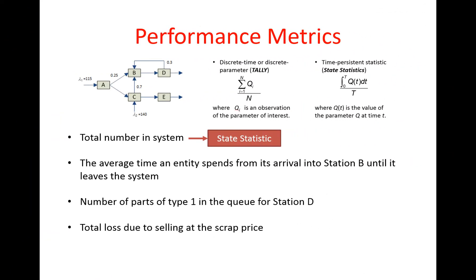The second performance metric is the average time that an entity spends in a particular subsystem of our model — specifically from the time it arrives at Station B until it leaves Station D and exits the system. I've changed the wording slightly so the metric is clearly described. I'm not interested in the time the entity leaves Station D and goes back to B, but specifically the time it leaves Station D through the exit link and actually exits the system. We'll see how to use a tally statistic to collect data about this output.